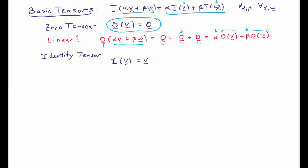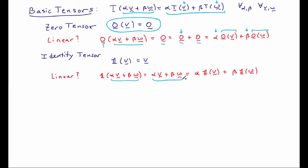We can also look at the identity tensor. The identity tensor applied to a vector gives you back the same vector. We can check linearity by applying it to a linear combination of vectors — we get back that linear combination. We can rewrite each vector V and W as the identity acting on it, and we get out a linear combination of the tensor applied to each individual vector. So the identity tensor also checks out as linear.